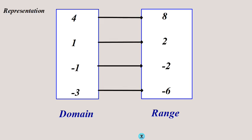We can also think of algebraic or mathematical functions. In this case the domain is the set of four numbers: 4, 1, negative 1, and negative 3, and the range is 8, 2, negative 2, and negative 6. The relation maps 4 to 8, 1 to 2, negative 1 to negative 2 — so we're mapping each number to its double. This is a mathematical relationship and it is a function as well.